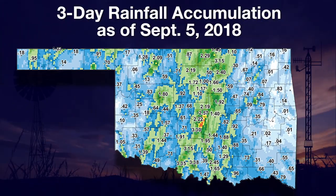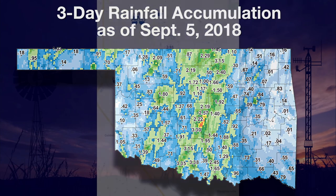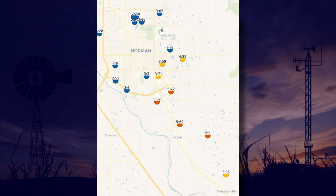Hello, Wesley here with your weekly Mesonet weather report. The arrival of September has seen the impact of tropical moisture that delivered some impressive rain amounts. The three-day rainfall map for September 5th shows almost the entire state received rainfall. The central part of the state received the highest totals, with over three inches recorded in parts of Jefferson, Stevens, McLean, and Osage counties. A citizen-reported rainfall system indicated that parts of Cleveland County near Noble received over five and a half inches during the same period.